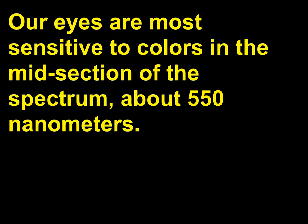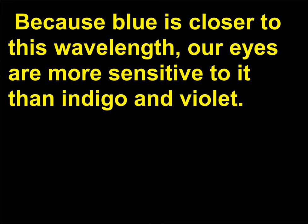Why then don't we see a violet sky? Our eyes are most sensitive to colors in the midsection of the spectrum, about 550 nanometers. Because blue is closer to this wavelength, our eyes are more sensitive to it than indigo and violet.